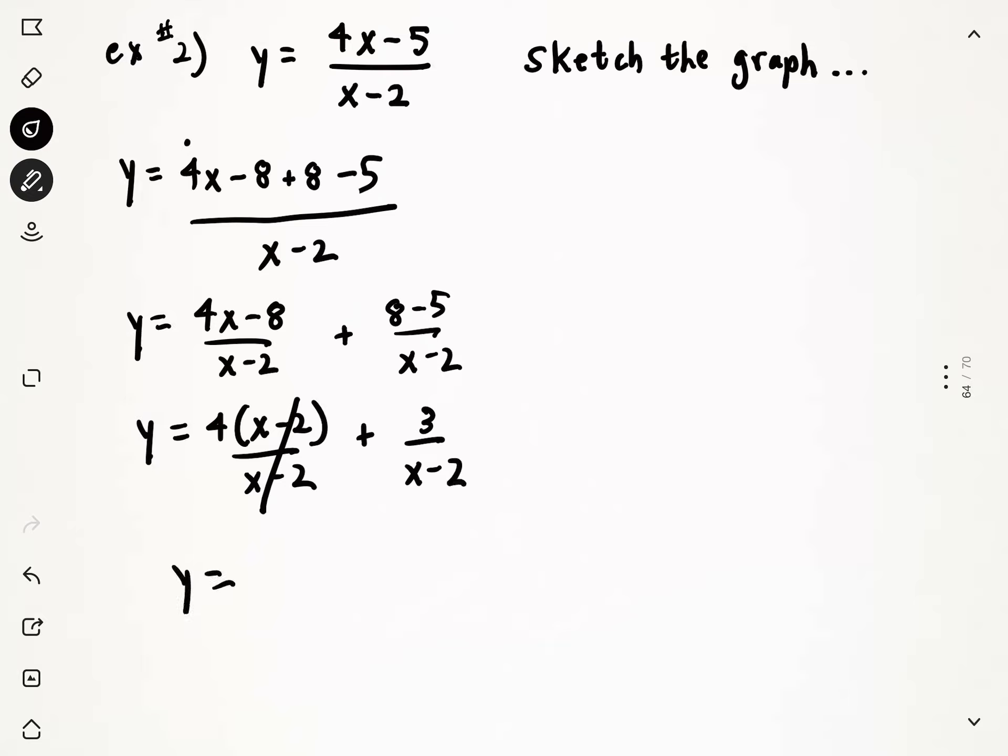Now what I can do is I can rewrite it as 3 over x minus 2 plus 4. Now this isn't really the answer if the question asks to sketch the graph, but what it does is it puts it in transformational form, and now it's like the other previous video and the questions that you worked on where you can get a mapping notation.